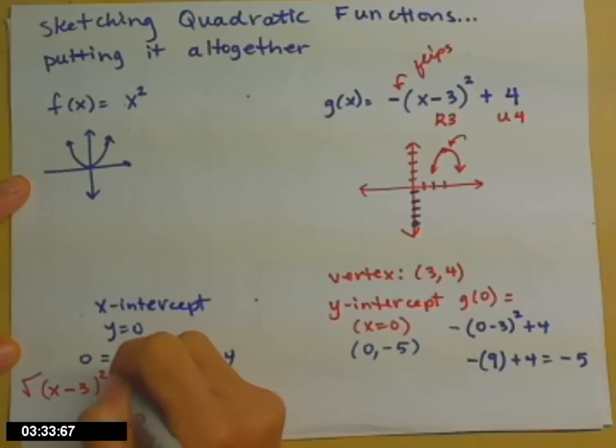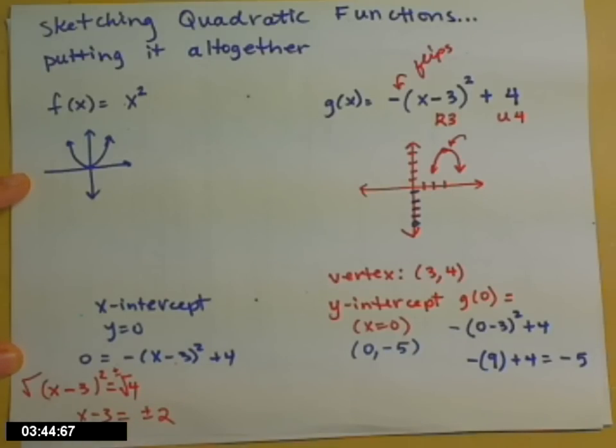So square rooting, we have to remember to put on our plus minus, because there are two answers. You can see them on the graph, or at least see where they're probably going to show up. So x minus 3, the square root and the square and cancel. x minus 3 equals plus or minus 2. Move that 3 across. x equals 3 plus or minus 2.